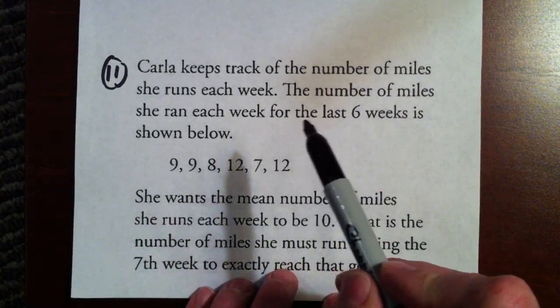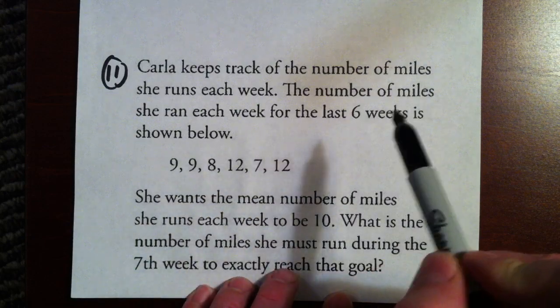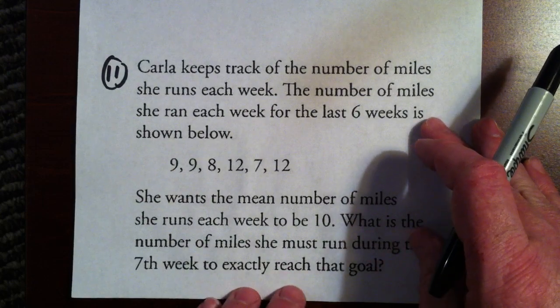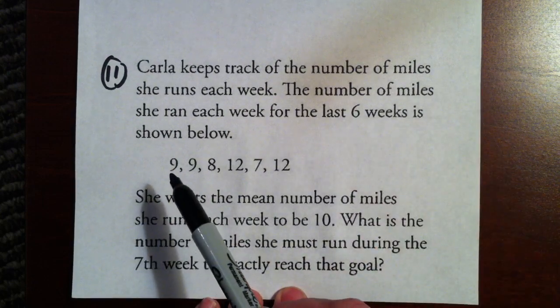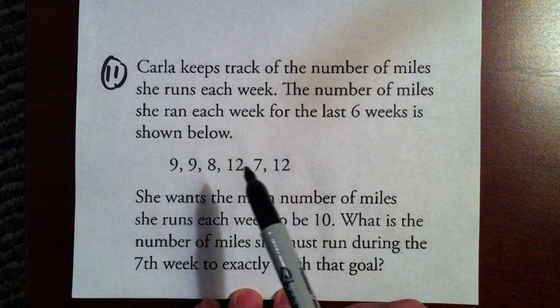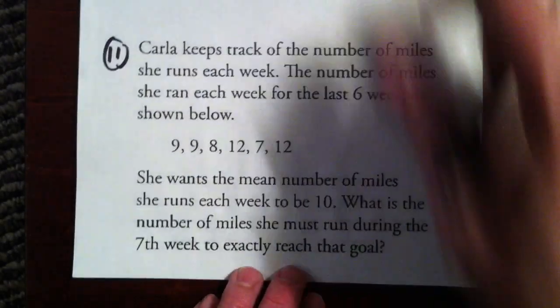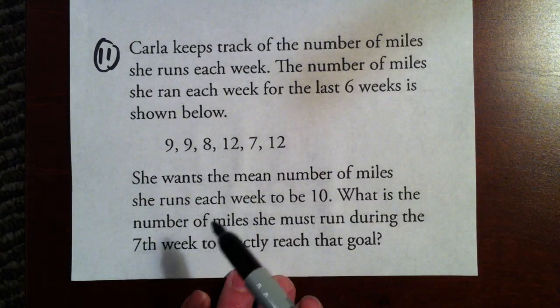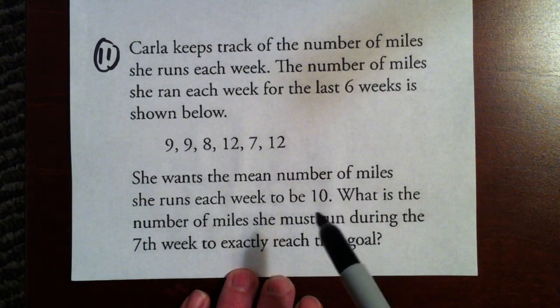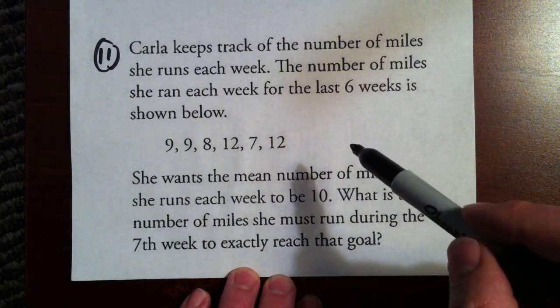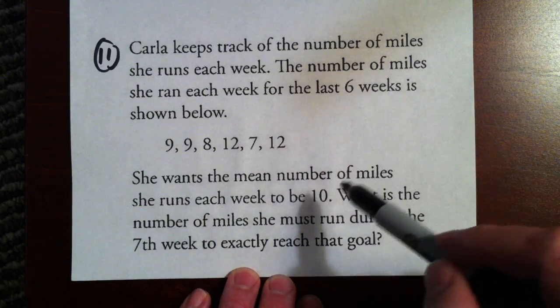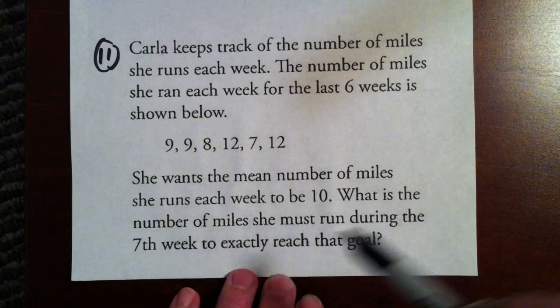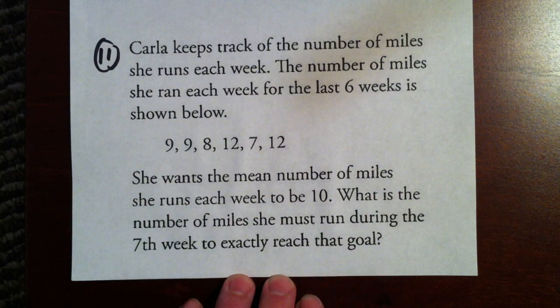Number 11, Carla keeps track of the number of miles she runs each week. The number of miles she ran each week for the last six weeks is shown below. So one week she ran 9, 9, 8, 12, 7, and another 12. She wants the mean or the average number of miles she runs each week to be 10. So in other words, she wants to be able to add all of these up plus one more and get an average of 10. What is the number of miles she must run during the seventh week to exactly reach that goal?